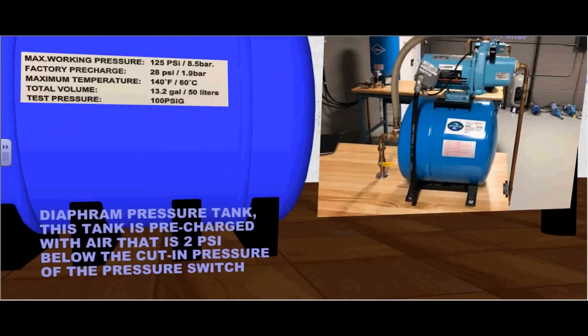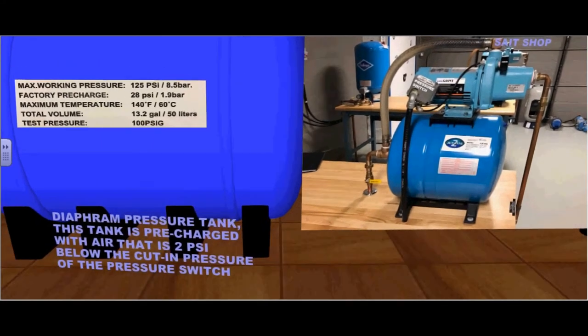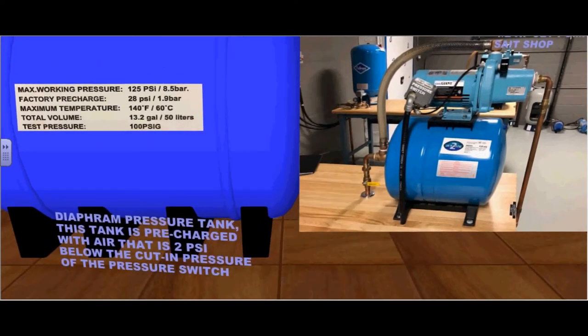This diaphragm pressure tank is pre-charged with air that is 2 psi below the cut-in pressure of the pressure switch. As you can see, it is factory pre-charged at 20 psi, 2 psi below the 30 psi cut-in switch.